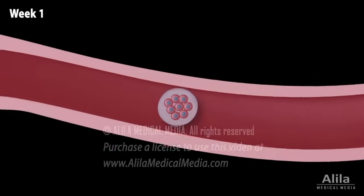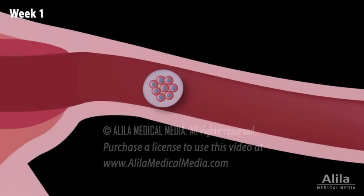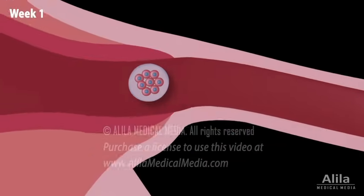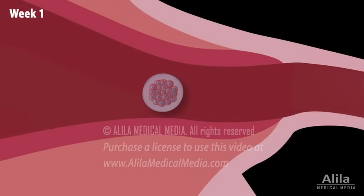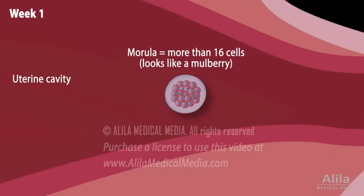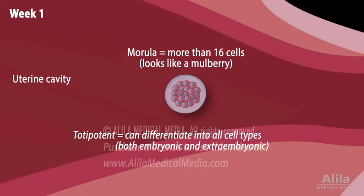After about three days, the conceptus arrives in the uterus. It now contains about 16 cells and is called a morula. Cells of the morula are totipotent — they are capable of differentiating into all cell types, both embryonic and extraembryonic.